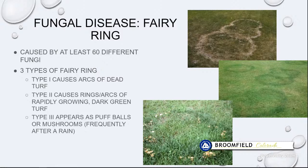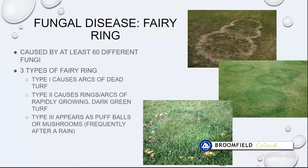Fairy ring is another fungal disease, not as common, caused by various types of fungus. There are three types: Type one causes arcs of dead turf. Type two causes dark green arcs or rings that get larger and larger. Type three is where you see actual above-ground mushrooms, often after a rain. Fungicides don't typically get rid of fairy rings — spring and fall aeration is good for this. Fungicides may seem to work for a bit but often haven't fully controlled it.